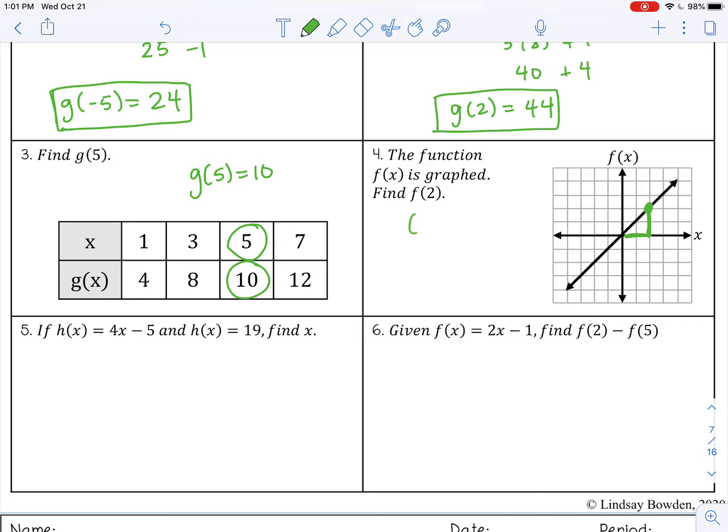So basically, when my input is 2, my output is also 2, because this point is 2, 2. So f of 2 gives me an output of 2.